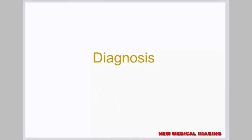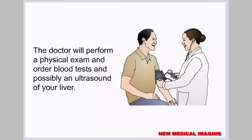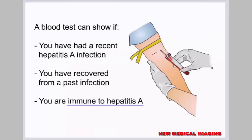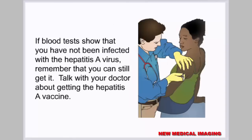The doctor will perform a physical exam and order blood tests, and possibly an ultrasound of your liver. A blood test can easily diagnose a hepatitis A infection by looking for antigens and antibodies in your blood. If you think you were recently infected, it will be 4 to 6 weeks before the virus can be found in your blood. A blood test can show if you have had a recent infection, have recovered from a past infection, or are immune to hepatitis A.